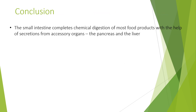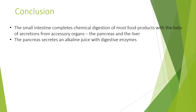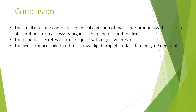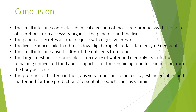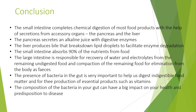In conclusion, the small intestine completes chemical digestion of most food products with the help of secretions from accessory organs such as the pancreas and liver. The pancreas secretes an alkaline juice with digestive enzymes. The liver produces bile that breaks down lipid droplets to facilitate enzyme degradation. The small intestine absorbs 90% of the nutrients from food. The large intestine is responsible for recovery of water and electrolytes from the remaining undigested food and compaction for elimination as faeces. The presence of bacteria in the gut is very important to help digest indigestible food matter and for the production of essential products such as vitamins. The composition of bacteria in your gut can have a very significant impact on your health and predisposition to disease.